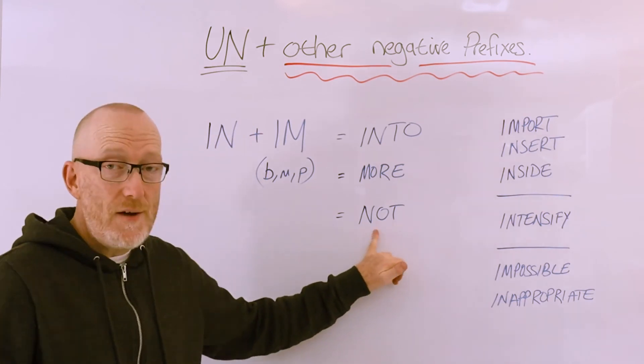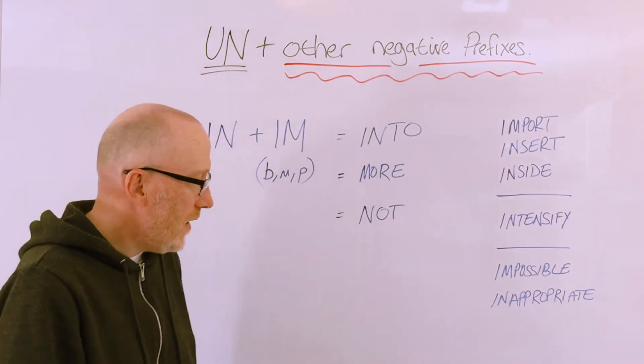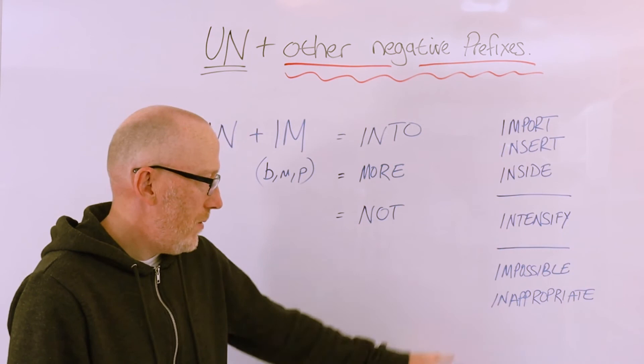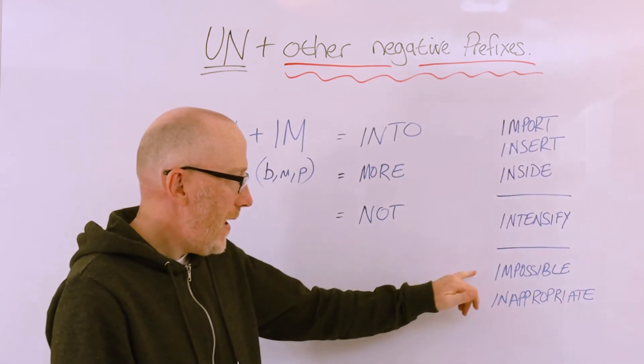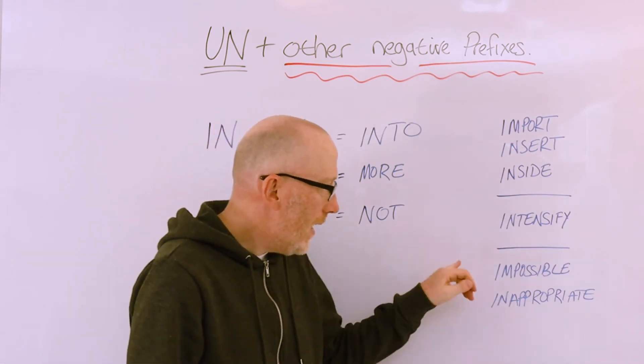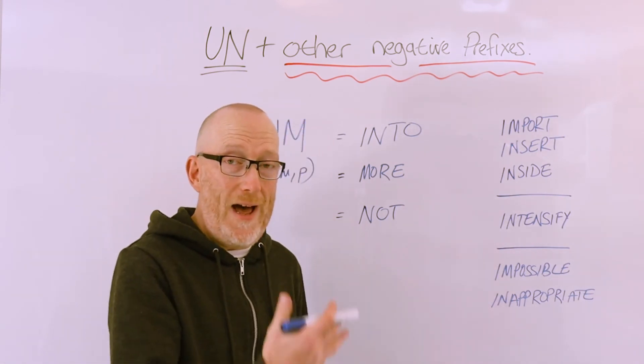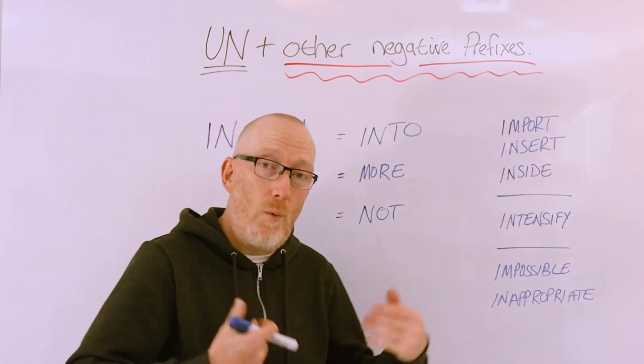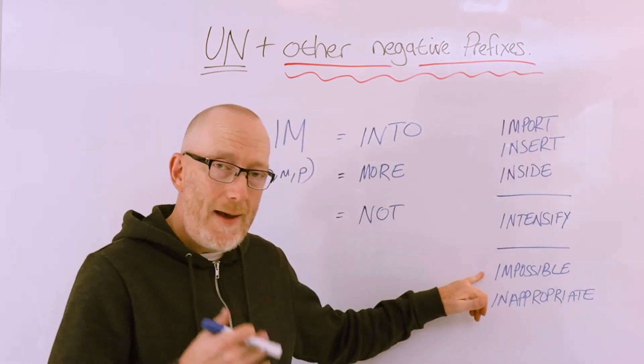Then we also have the negative meaning of NOT. So we have IMPOSSIBLE or Inappropriate. IMPOSSIBLE means IT IS NOT POSSIBLE TO DO SOMETHING. Either I CAN'T do it or I do not have the ability or the tools or what is necessary to do something. It is IMPOSSIBLE.